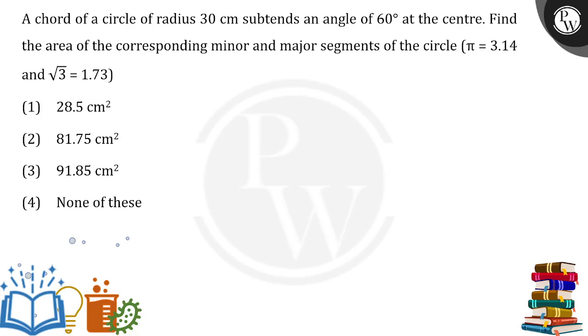A chord of a circle of radius 30 cm subtends an angle of 60° at the center. They have given the radius and the central angle. They are asking to find the area of the corresponding minor and major segments.